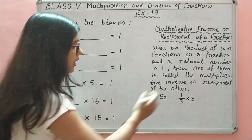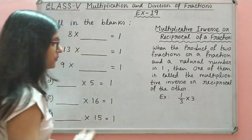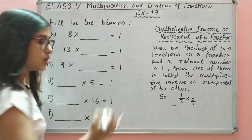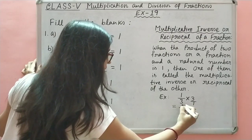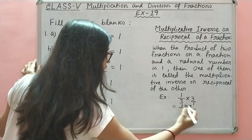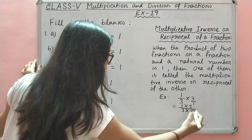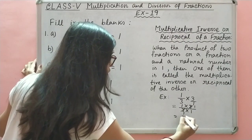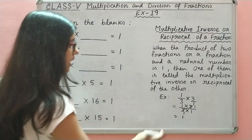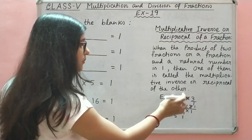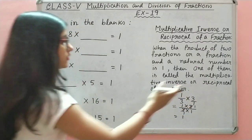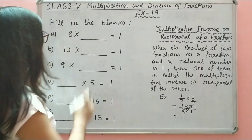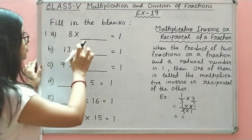So, 1 upon 3 into 3 — here 3 means 3 with 1 in the denominator. We will multiply the numerators: 1 into 3, and multiply the denominators: 3 into 1. So 3/3 cancels to give 1. Therefore, 1 upon 3 is the multiplicative inverse of 3, and 3 is the multiplicative inverse of 1 upon 3.